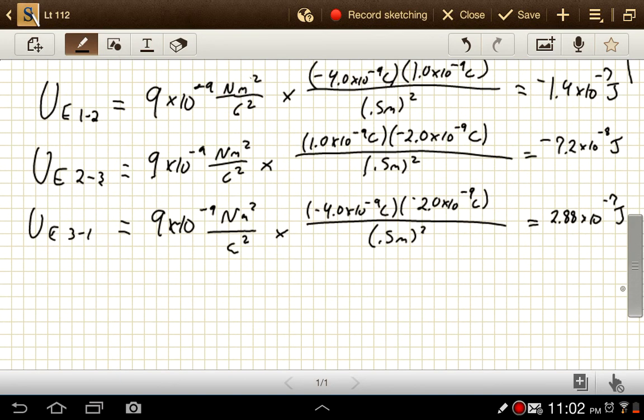So the overall electric potential energy is just going to be these three values added together, which gives us 7.2×10^-8 joules.